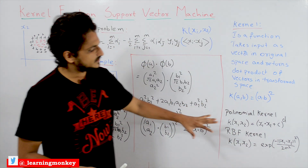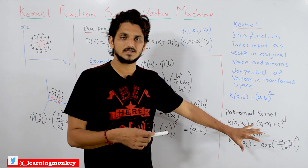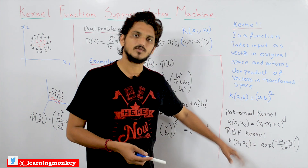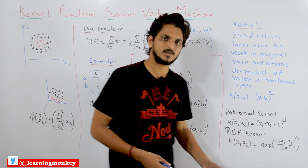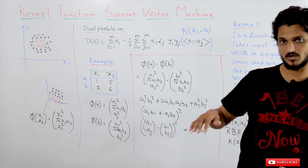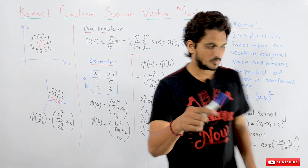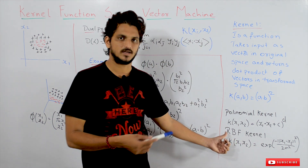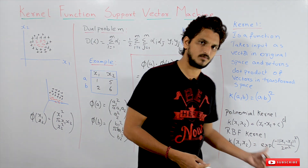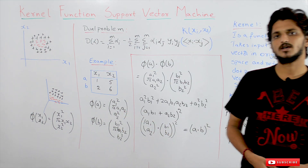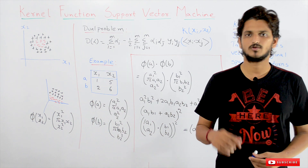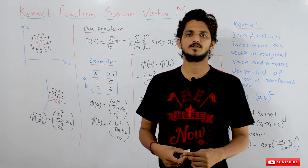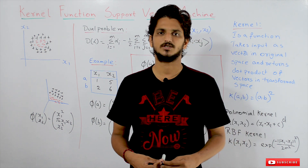We will go deeper into these kernel functions in a separate class after completing all our models — we'll discuss what these functions are and what their uses are. The RBF kernel is the most used and is applicable to many data sets, that's why we use it very much. Hope you understand the concept. If you have any questions please post in the comment section below. Thanks for watching — if you haven't subscribed to our channel please subscribe and press the bell icon for the latest updates. Thank you.